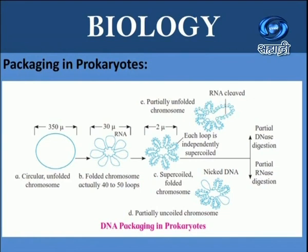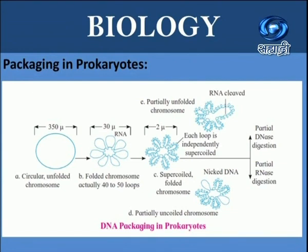The length of the DNA double helix molecule in a typical mammalian cell is approximately 2.2 meters. This can be worked out by multiplying the total number of base pairs by the distance between consecutive base pairs. The approximate size of a typical nucleus is 10 to the power of minus 6 meters. This long DNA molecule must therefore be condensed, coiled, and supercoiled to fit inside such a small nucleus. We want to see how packaging is done in prokaryotes and in eukaryotes.